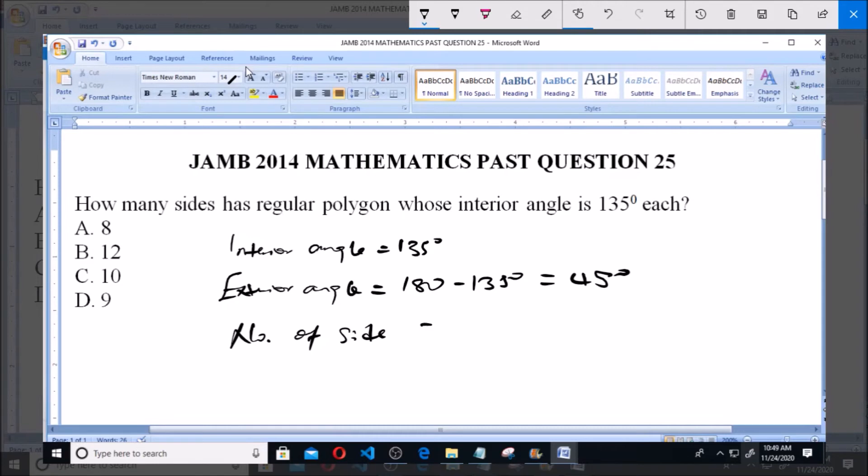The number of sides equals 360 degrees divided by 45, since the total sum of the exterior angles of a polygon is 360. So 360 divided by 45 degrees, which is each exterior angle, equals